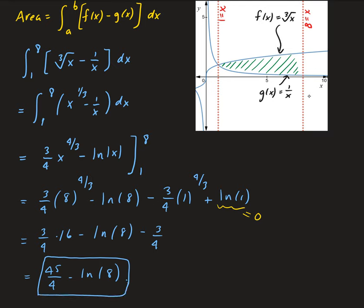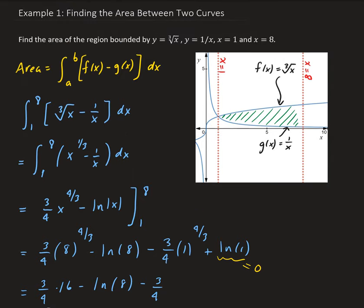If this were an application problem, this would be in whatever units are being used, squared. To recap: we take the top function minus the bottom function. That's because if we look at the representative piece, it's a vertical piece, so the integral has to be in terms of x.